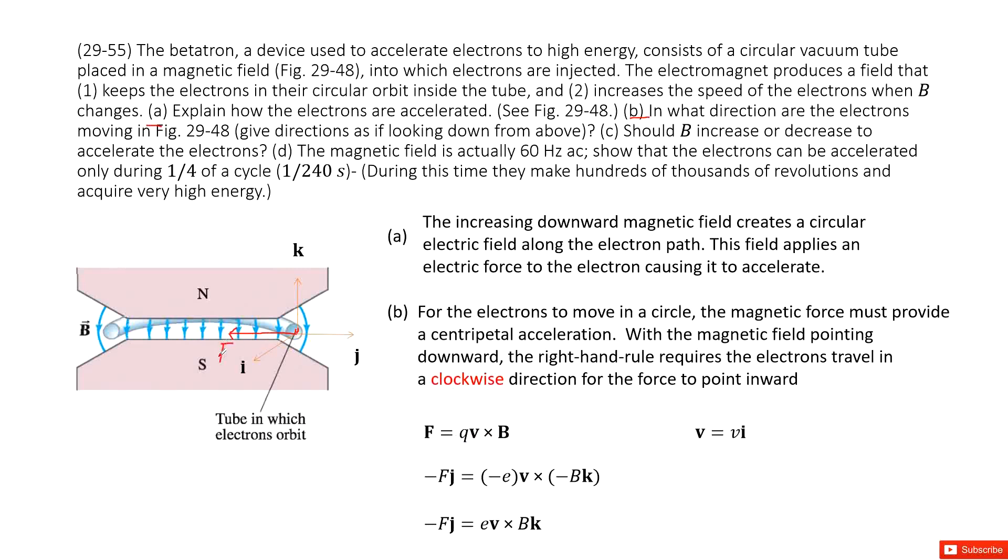This force must be pointing to the center of the circle. This is in negative J direction. We know the electrons carry negative charges, so negative e. This is the velocity, we haven't decided. The magnetic field is pointing down, so negative B K direction. Simplified, we need to look at V cross K should equal to negative J. So V should be in I component.